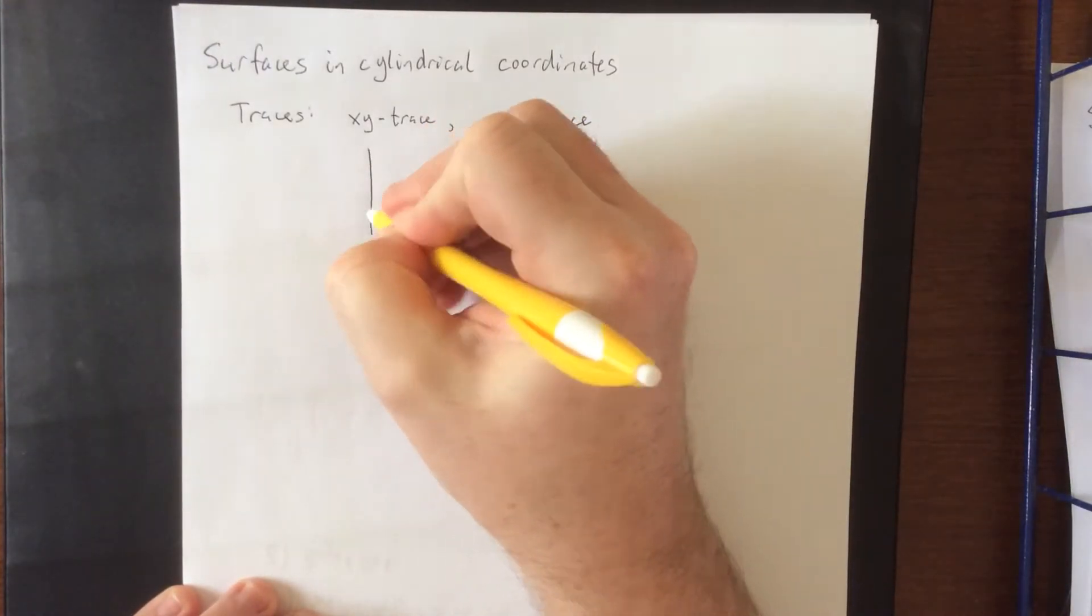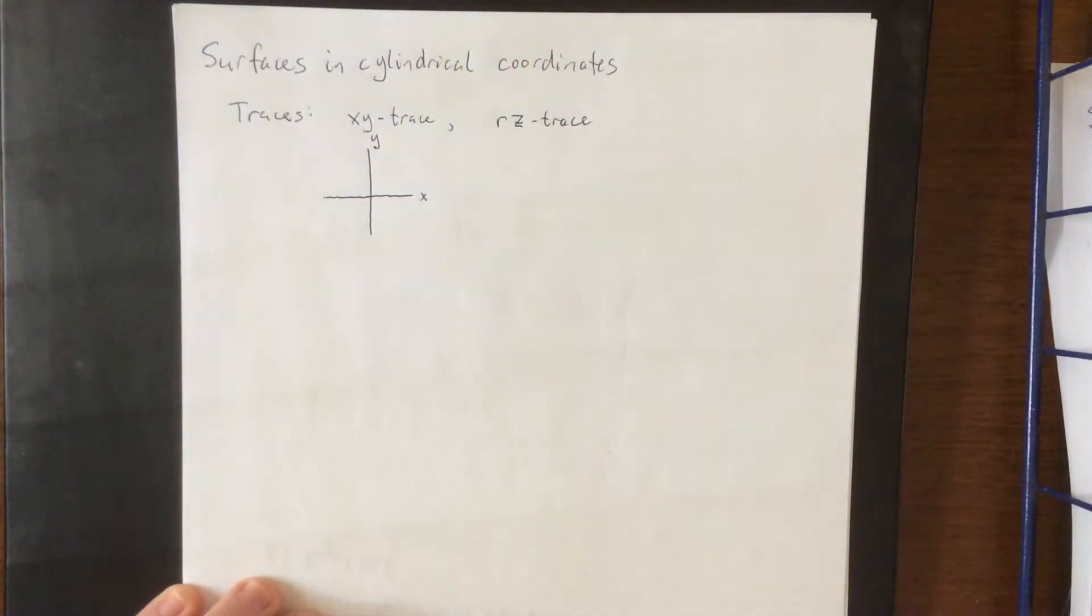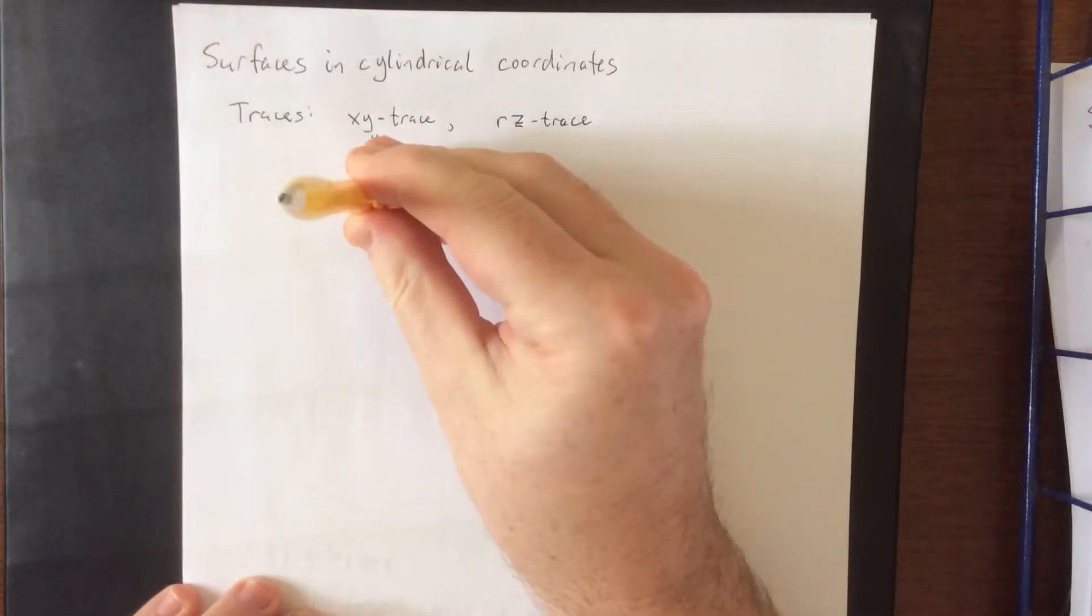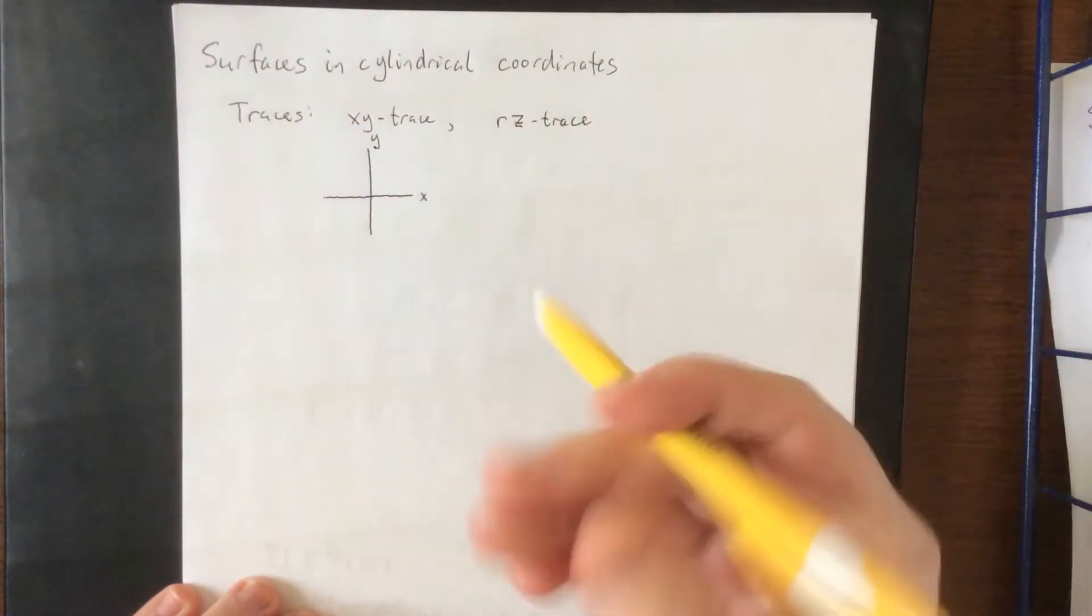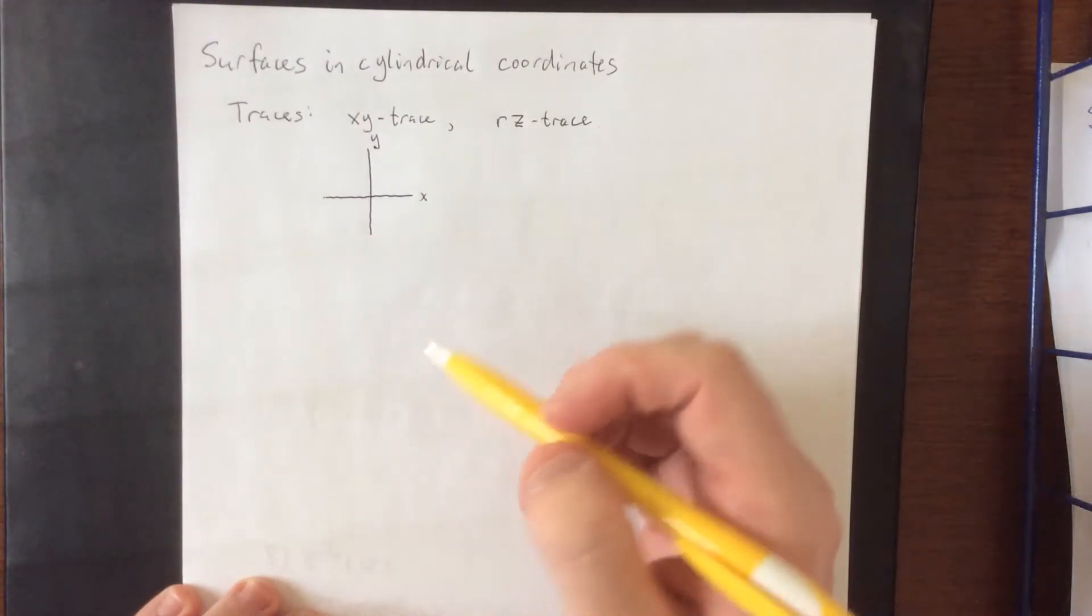When it comes to the XY trace, that's where we're essentially looking at something from above. So the Z axis is coming straight up out at you, and we're looking directly down on it. We get that by setting our Z variable equal to a constant.